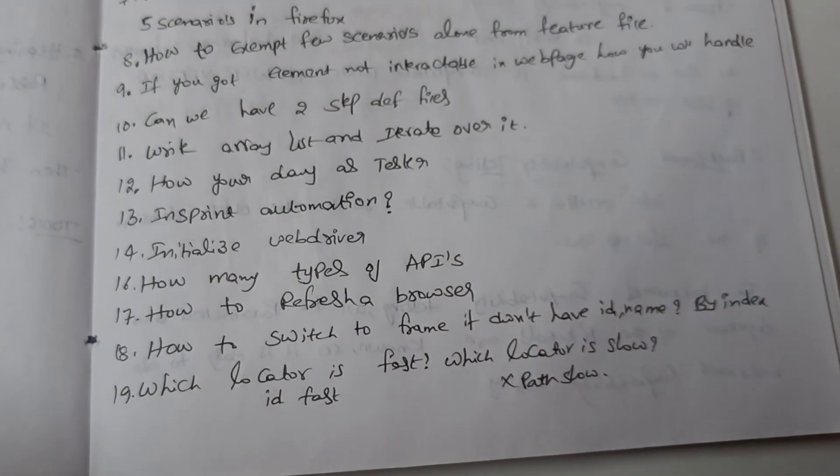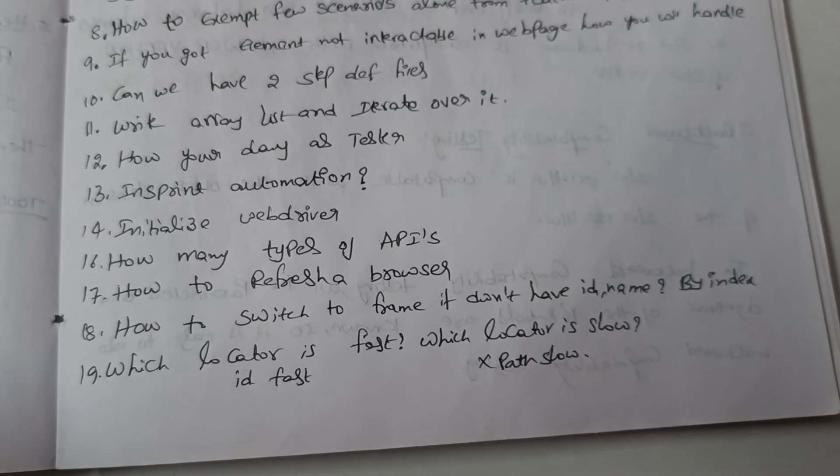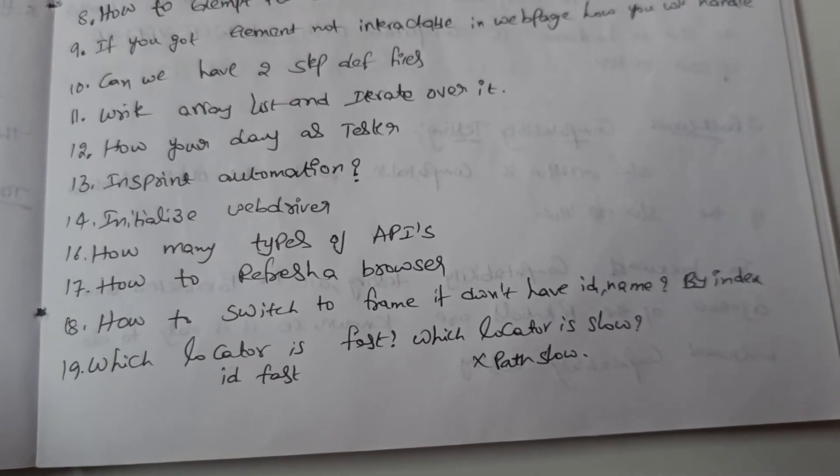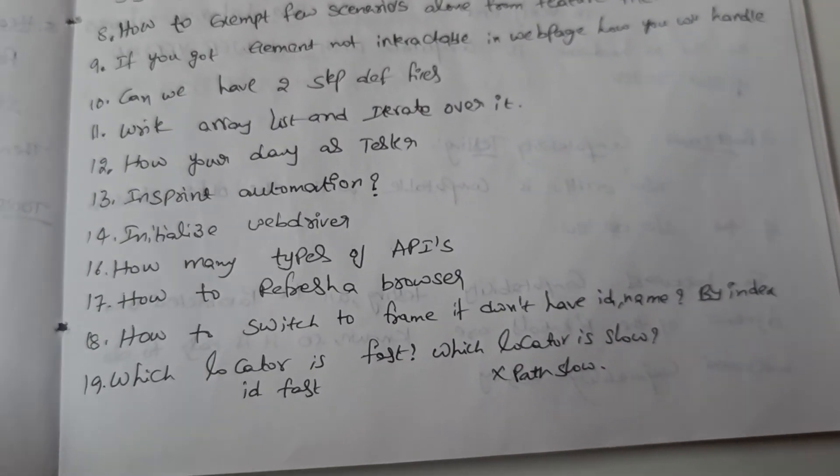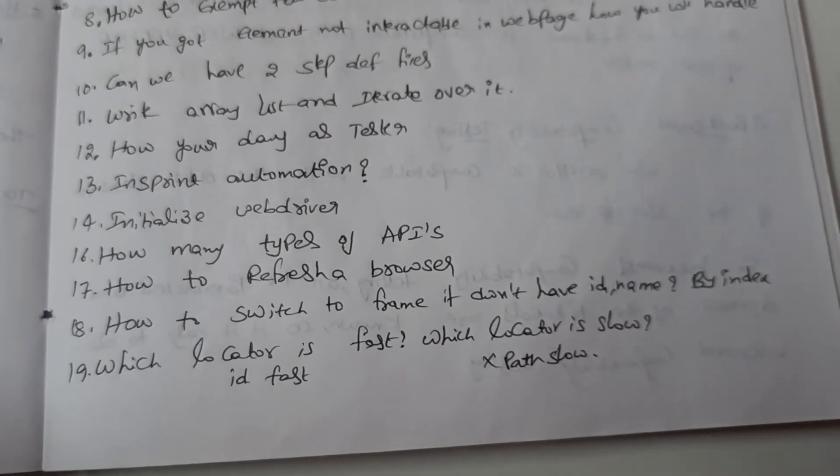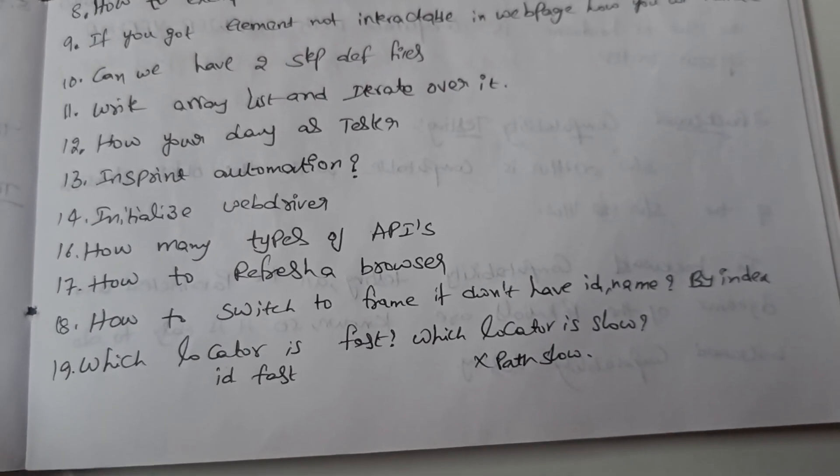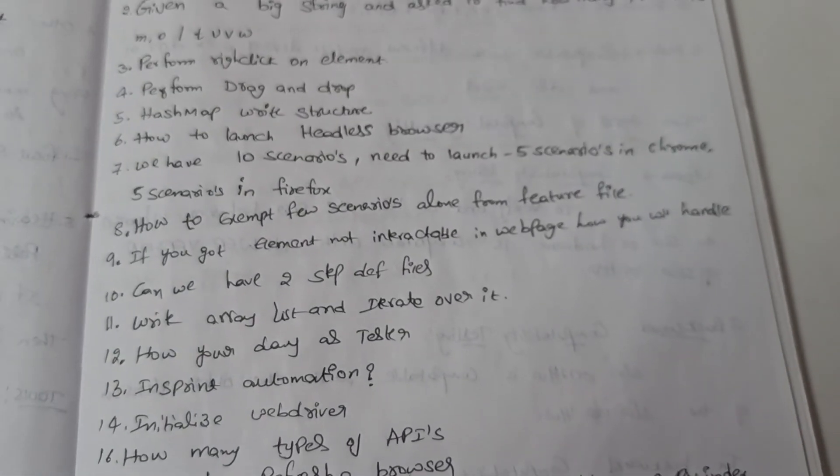16th question: how to refresh your browser? And how to switch to frame if we don't have any ID or name? I have just written the answer like by index - this is the answer I have mentioned. And which locator is fast and which locator is slow? So these are all the questions. Thank you.